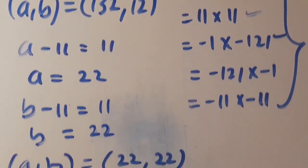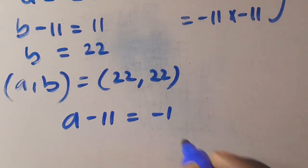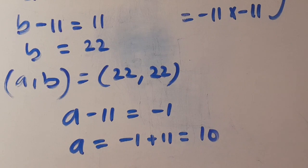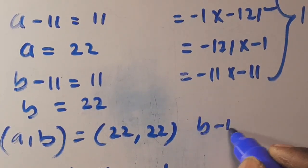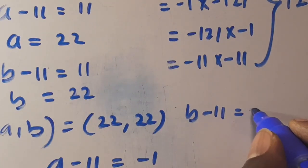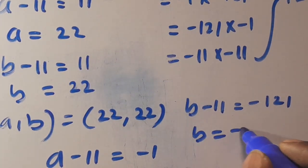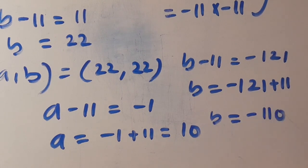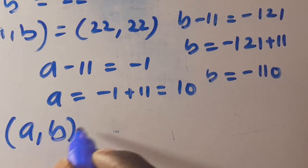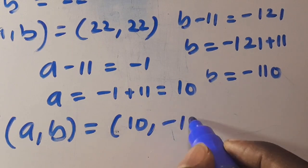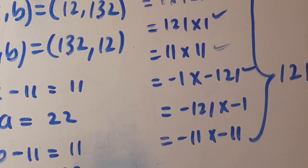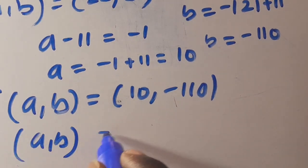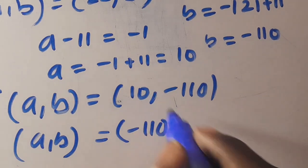For the third factor pair: a - 11 = -1 gives a = 10, and b - 11 = -121 gives b = -110. So (a, b) = (10, -110), and by symmetry also (a, b) = (-110, 10).